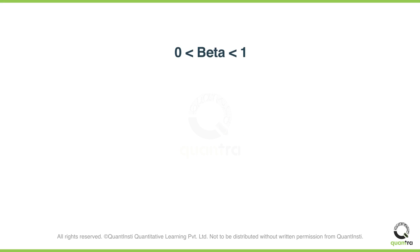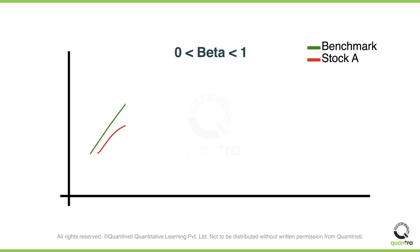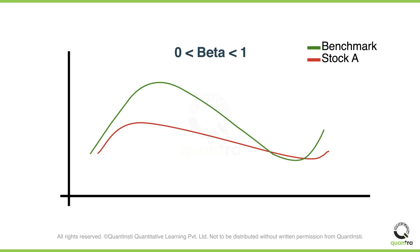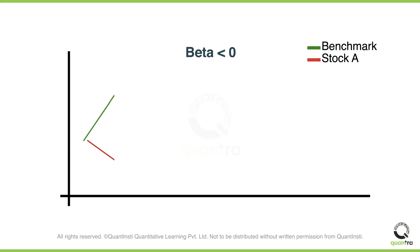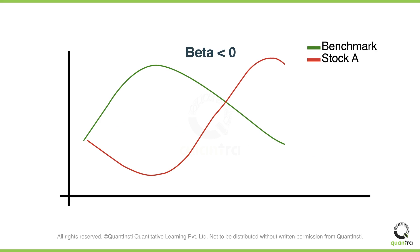On the other hand, if the Beta is between 0 and 1, it means that the stock is less volatile than the benchmark. In this scenario, the stock is underperforming the benchmark. If Beta is less than 0, it means that volatility is negatively correlated with the market — the performance of the stock is completely opposite to that of the benchmark.